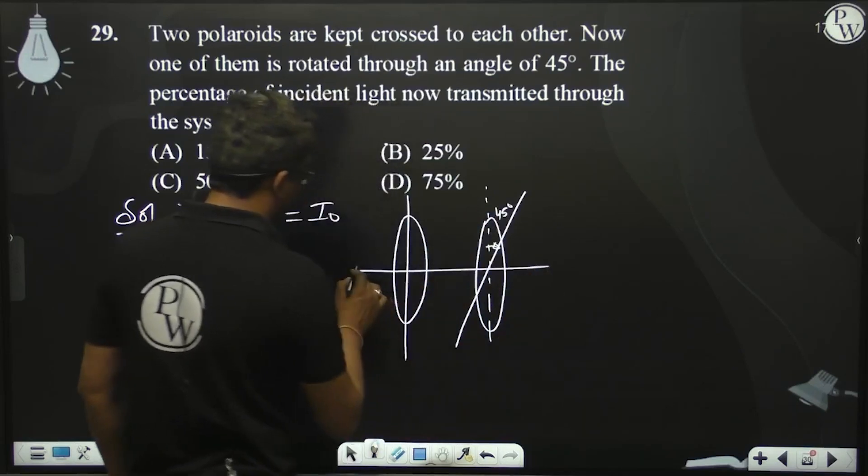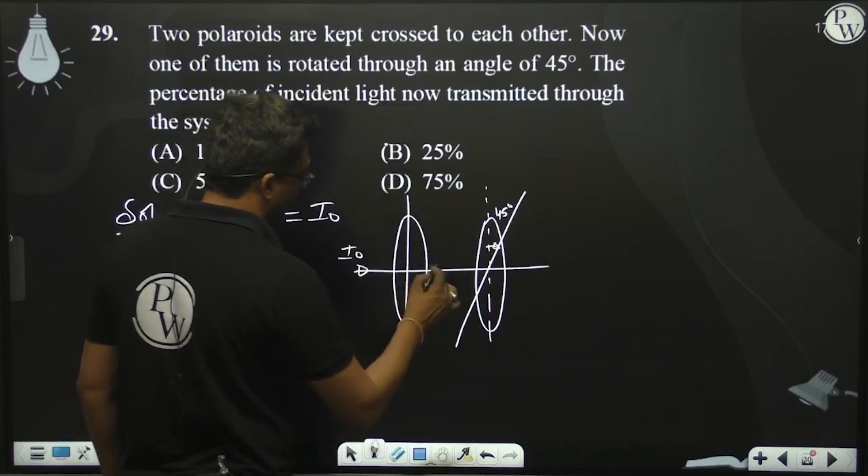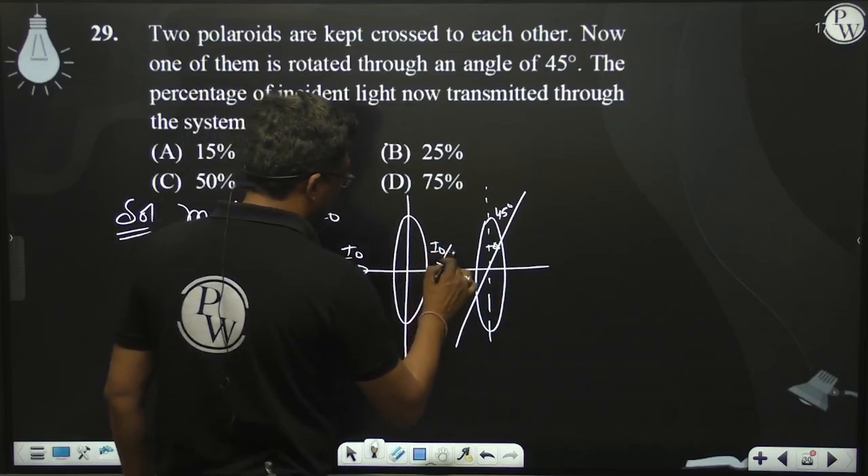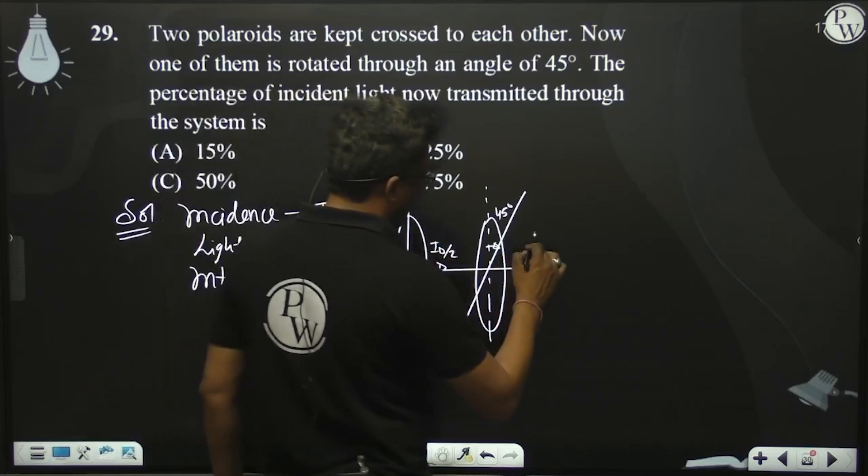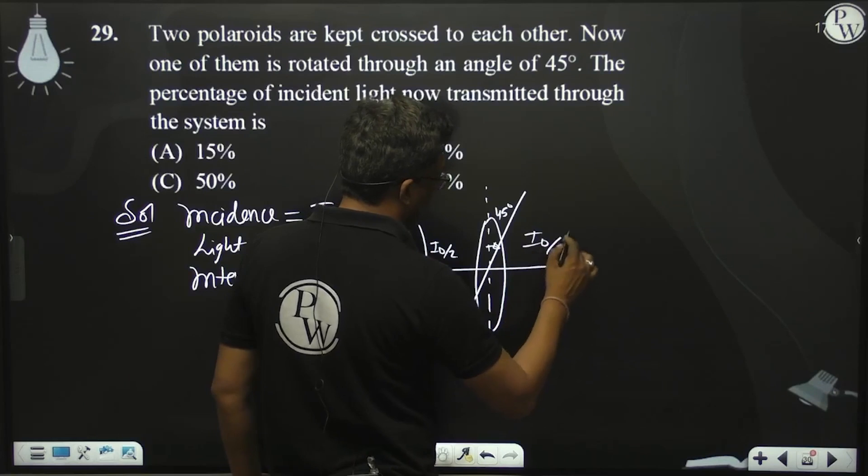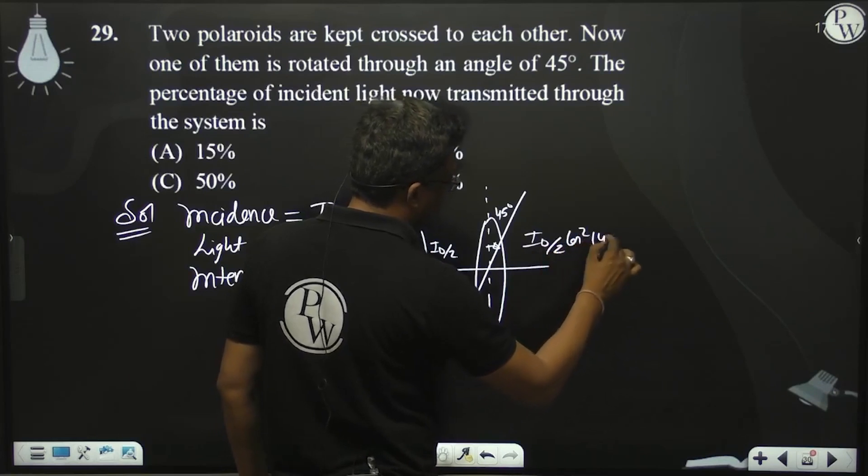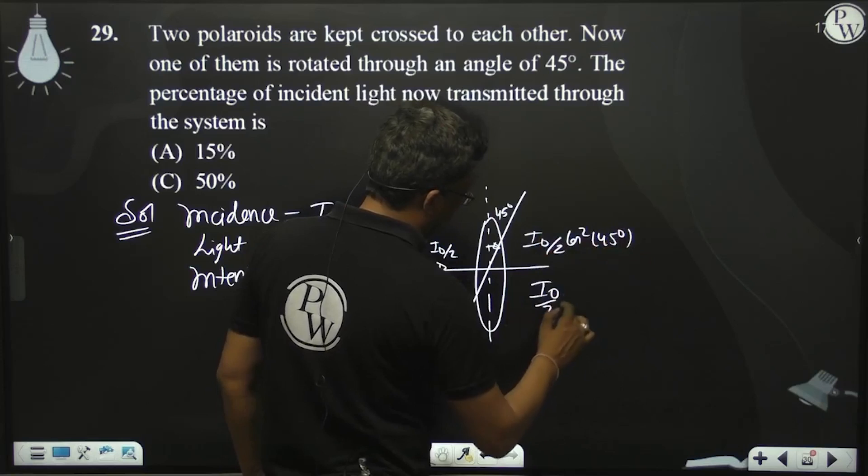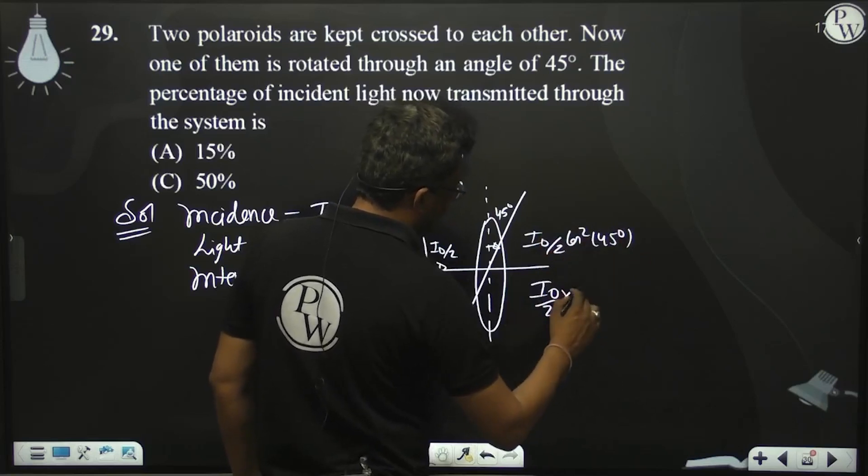Now we know that it becomes I naught by 2. That will be I naught by 2 times cos squared 45. Now calculate: I naught by 2 times 1 by 2.